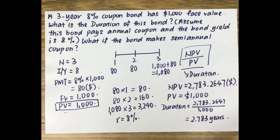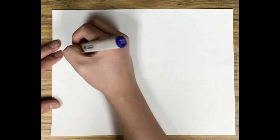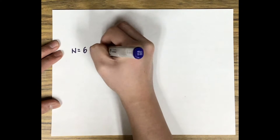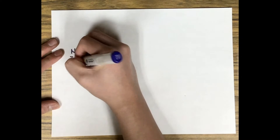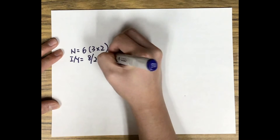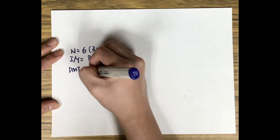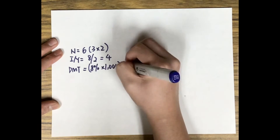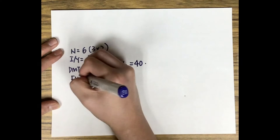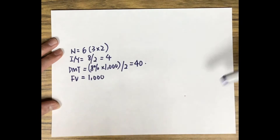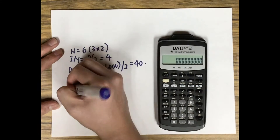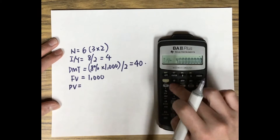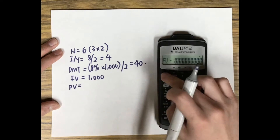Next, let's look at the semi-annual coupon bond. We first calculate the present value using the calculator. N = 6 (three years times two), I/Y = 4 (8% divided by 2), PMT = 8% times $1,000 divided by 2 = $40, and FV = $1,000. The present value of this bond is $1,000.